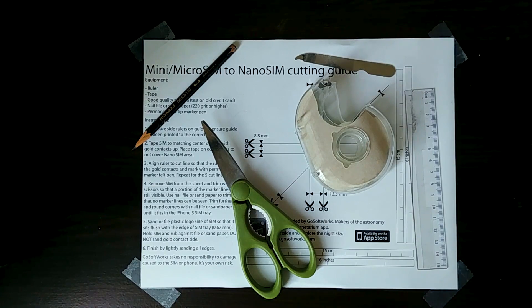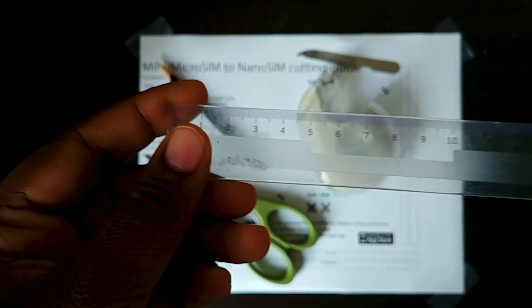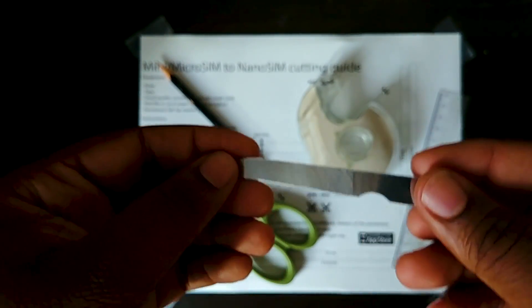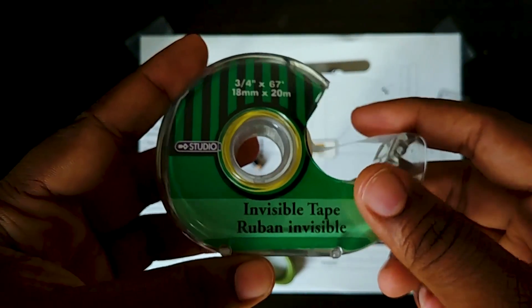Some of the stuff you'll be needing for this project are a good pair of scissors, a pencil, a ruler, a nail file for sanding it down because the SIMs are thinner, and some tape.